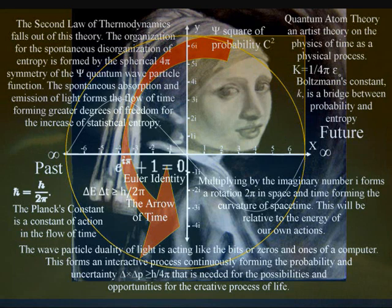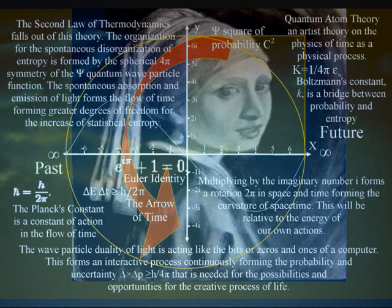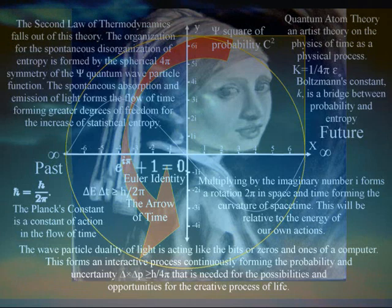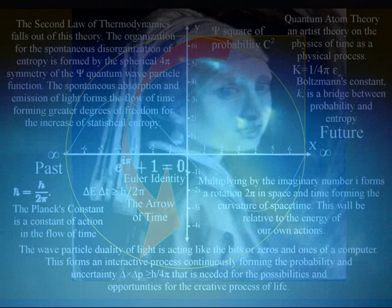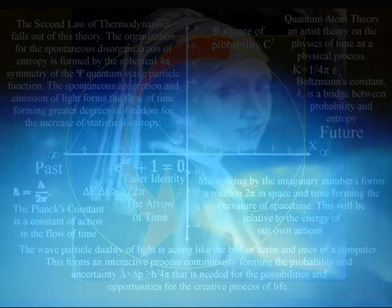This is a process of continuous energy exchange, or what I like to call continuous creation. In this theory, the physics of quantum mechanics represents time as a physical process, with quantum uncertainty or probability forming a physical structure that is needed for the future possibilities and opportunities for each life-form to have its own freedom to create its own evolutionary path. This broken symmetry can be seen as spiral symmetry in plant life, and as line symmetry in intelligent life forms.